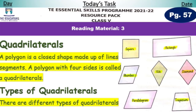Types of quadrilateral. There are different types of quadrilateral. As you can see the diagrams on page number 57, there are many examples and types of quadrilaterals given: square, rectangle, rhombus, kite, diamond, parallelogram, and trapezium.